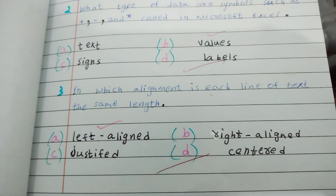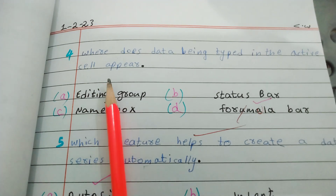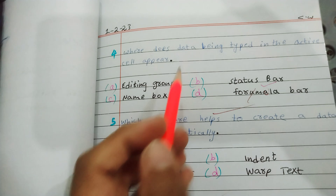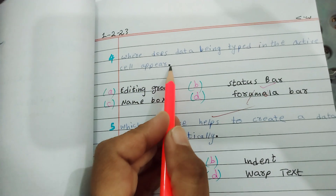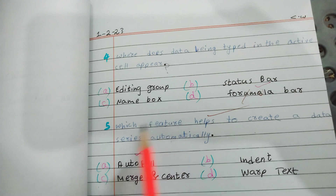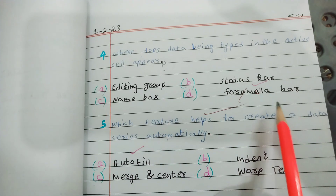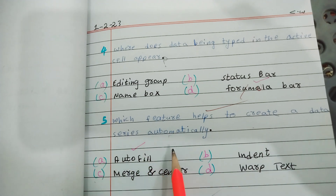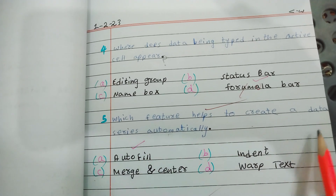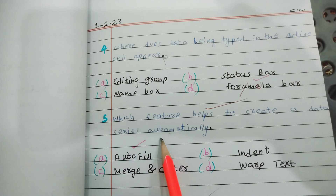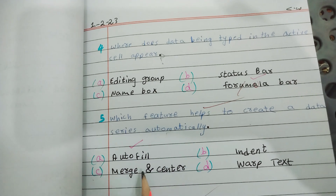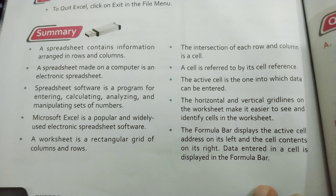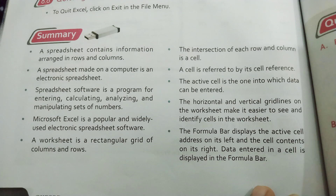Left aligned. Where does data being typed in the active cell appear? Formula bar. These features help to create a data series automatically — auto fill. Some days are also necessary for solving the MCQs.